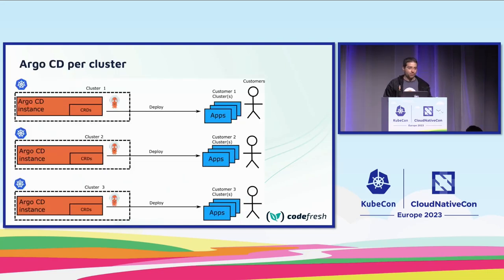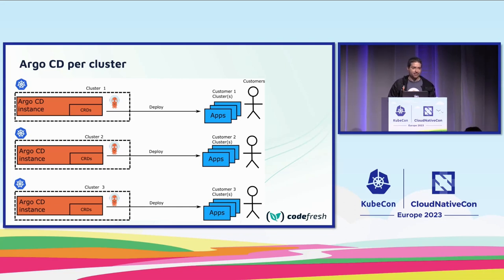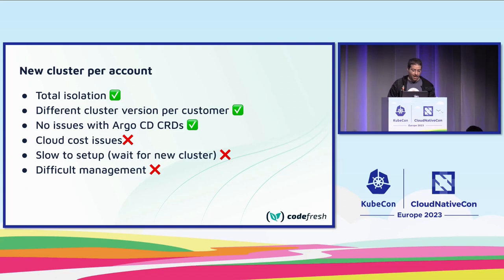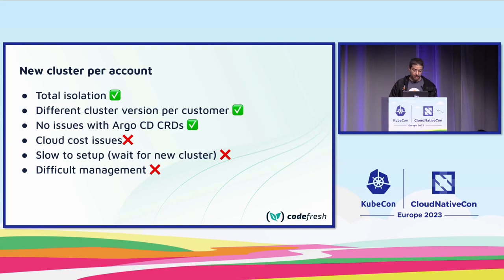On the other end of the spectrum, we could give each customer their own cluster. As soon as somebody signs up, we launch a cluster just for them, install an Argo CD instance, and give them full access. This model is a customer per cluster. We get total isolation — everybody owns their own cluster. We're also free to use different Kubernetes or Argo CD versions without CRD conflicts. As far as customers are concerned, it's perfect for them.